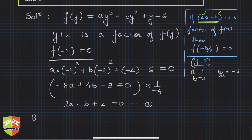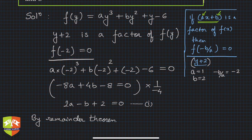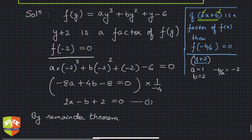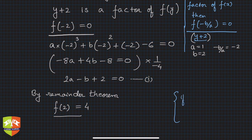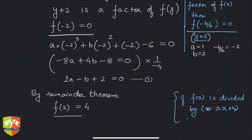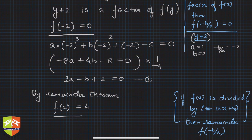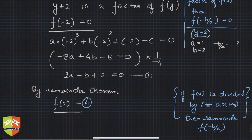By the remainder theorem, if f(x) is divided by (ax + b), the remainder is f(−b/a). In this case, since we're dividing by (y − 2), we get f(2) = 4. Note that in the factor theorem, this same remainder becomes 0; here the remainder is given as 4, so f(2) must equal 4.